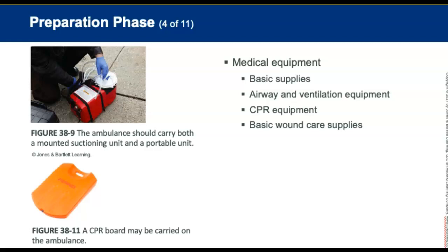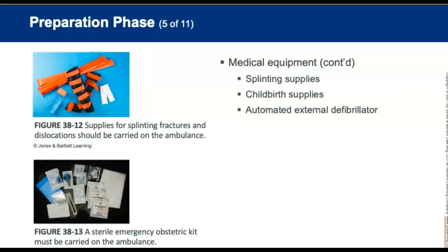For airway and ventilation, we need OPAs for adults, children and infants, NPAs for adults and children, CPAP equipment, equipment for advanced airway procedures, a portable artificial ventilator that operates independently of an oxygen supply, bag-valve mask, non-rebreathers, nebulizer mask, portable and mounted suction units, and at least two different types of oxygen supply units — one portable and one installed on board. For CPR equipment, we need a CPR board and a mechanical device capable of delivering chest compressions, plus basic wound care supplies, splinting, childbirth supplies, and an AED.